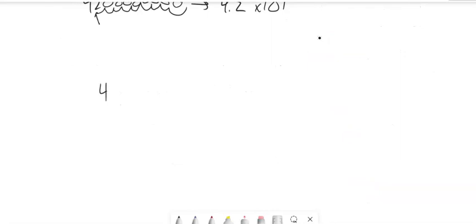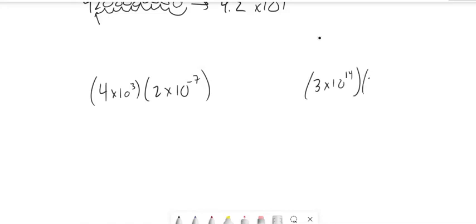Scientific notation is kind of fun to do some calculations with as well. So 4 times 10 cubed times 2 times 10 to the negative 7th. Notice everything in here is multiplied together. There's no addition or subtraction, so I can multiply in whatever order I want. 4 times 2 is 8. 10 to the third times 10 to the negative 7 is 10 to the negative 4th. So this would be 8 times 10 to the negative 4. Notice this one: 3 times 2 is 6, 10 to the 14th times 10 to the negative 2 is 10 to the 12th.